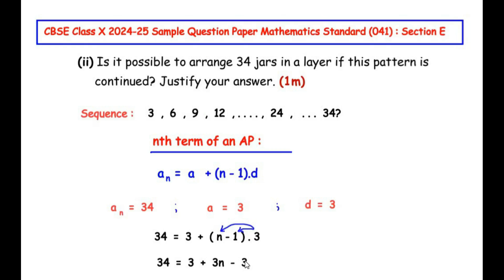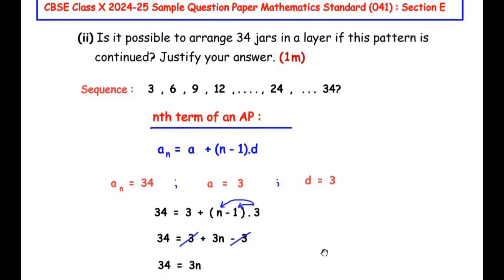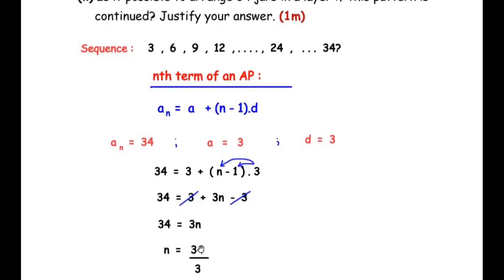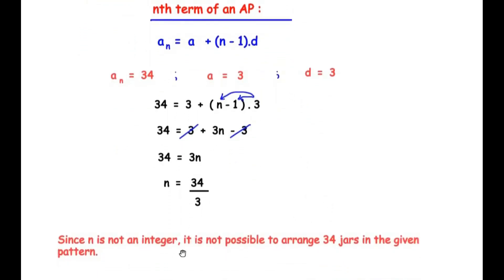So 34 = 3 + 3n − 3. The +3 and −3 cancel, leaving 34 = 3n, which gives n = 34/3. This gives a decimal value, but n represents the number of layers and must be an integer. Since n is not an integer, it is not possible to arrange 34 glass jars in any layer of this pattern.